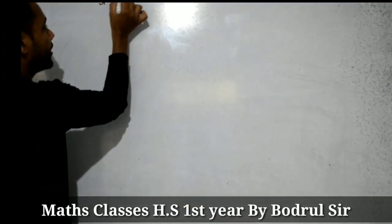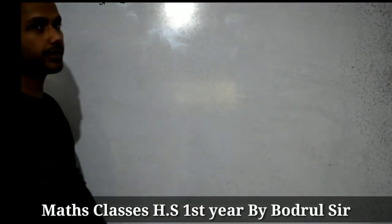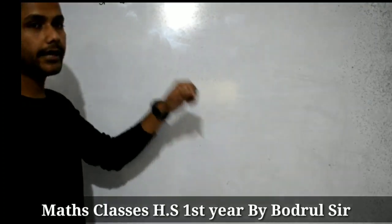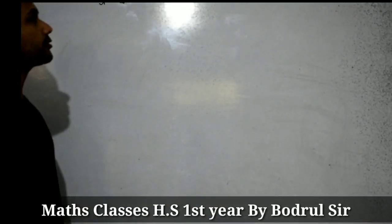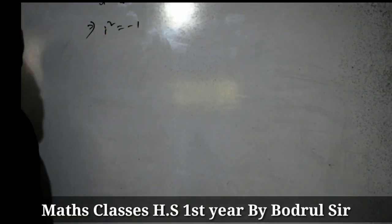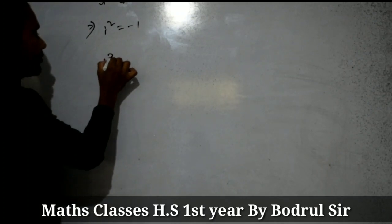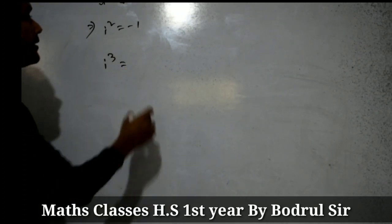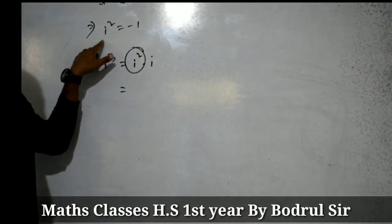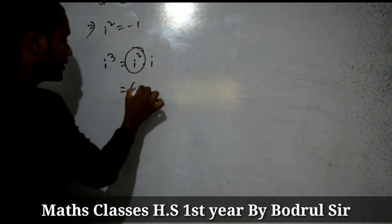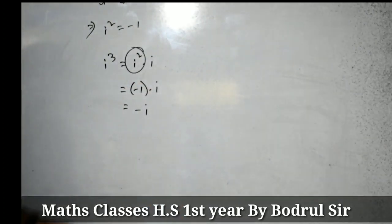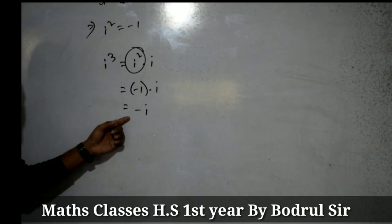So, i equals the square root of minus 1. This is the fundamental imaginary unit called iota: i equals root of minus 1. Now, squaring both sides, we can write i squared equals minus 1. Same way, we can find i cubed: i cubed means i squared into i, and since i squared equals minus 1, that gives minus 1 into i, which is clearly minus i. So i cubed equals minus i.